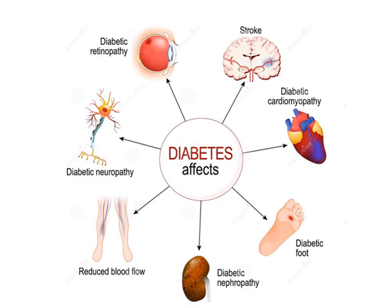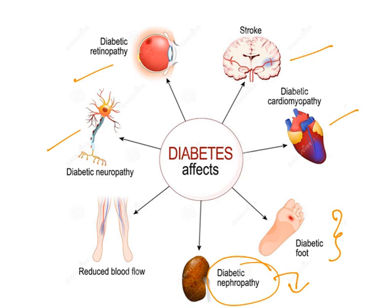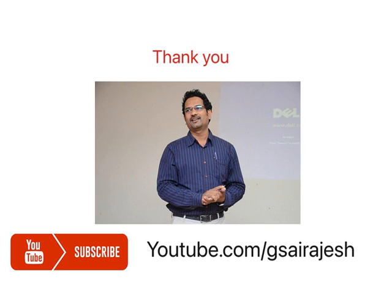These are all the final symptoms. We have seen retinopathy, neuropathy, stroke, cardiomyopathy, and diabetic foot — wound healing will get reduced because of excessive levels of glucose in the blood. In nephropathy, people will lose albumin, and reduced blood flow also occurs. So overall, diabetes mellitus has very debilitating and harmful effects on the human body. Thank you for watching this video. If you like my video, subscribe.